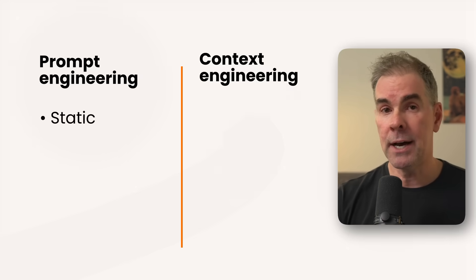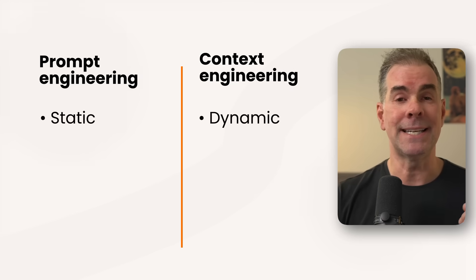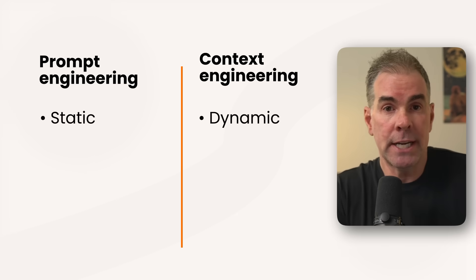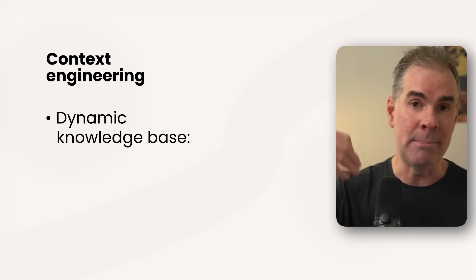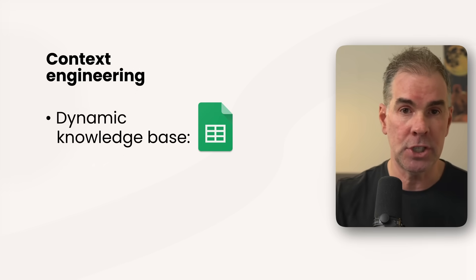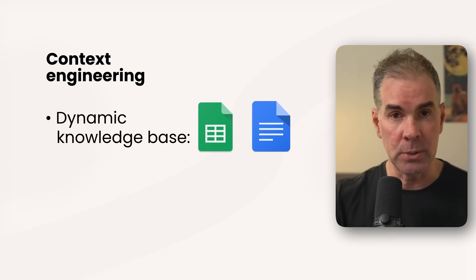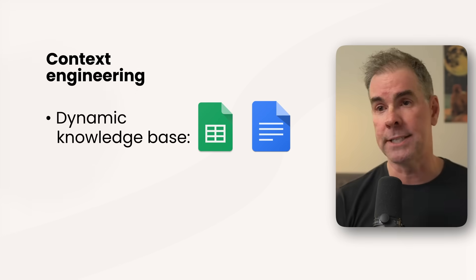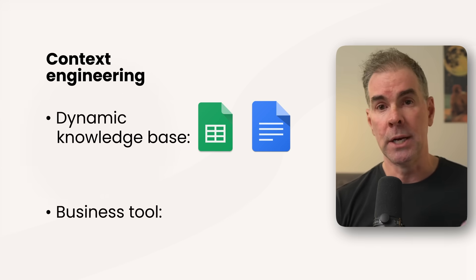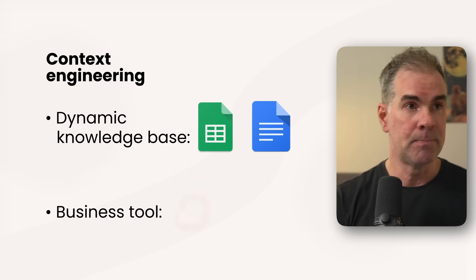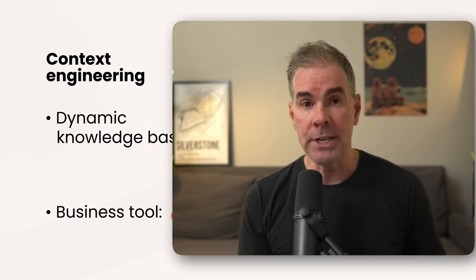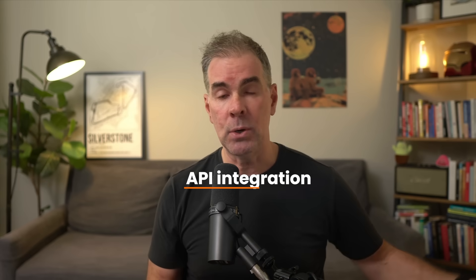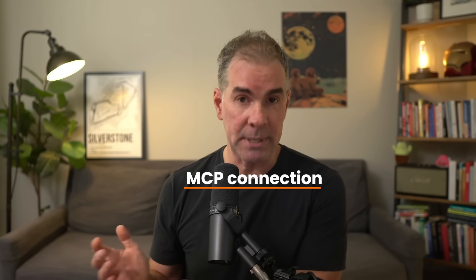When it comes to context engineering, there are two primary differences. Number one, the context is dynamic — you're connecting your prompt to either a dynamic knowledge base like a Google Sheet or Google Doc that gets updated, or you're connecting to a tool you use in your business like ConvertKit or HubSpot. And you're doing this through either an API or an MCP connection.